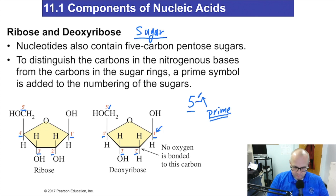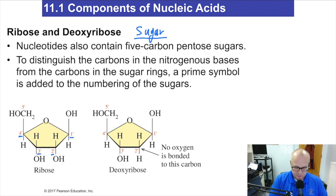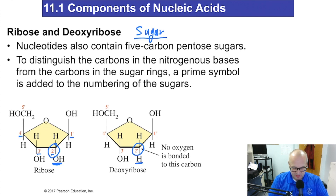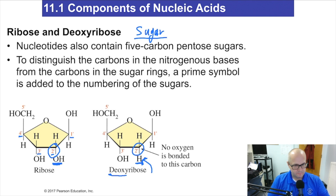Let's take a look at the two sugars and their differences. At the two-prime carbon, the OH of ribose has been replaced with simply a hydrogen in deoxyribose. At the two-prime location, OH is removed and hydrogen is put back. This is why it's called deoxyribonucleic acid — it's missing the oxygen at the two-prime carbon. Deoxyribose is missing the OH at the two-prime carbon; instead of an OH, there's an H there.